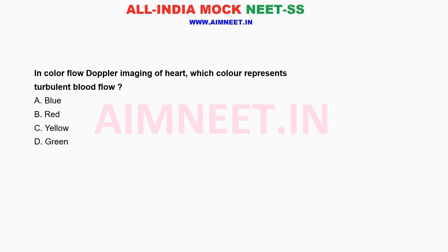In color flow Doppler imaging of the heart, which color represents turbulent blood flow? A. Blue. B. Red. C. Yellow. D. Green.